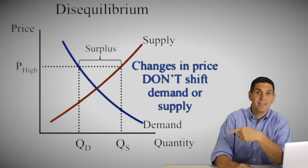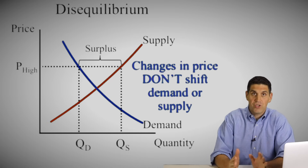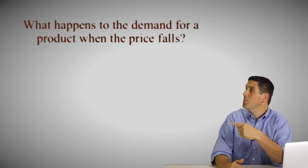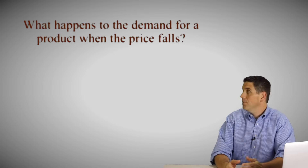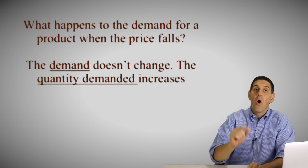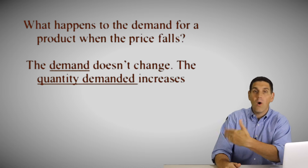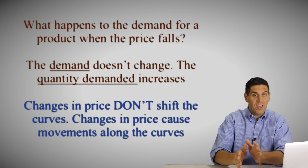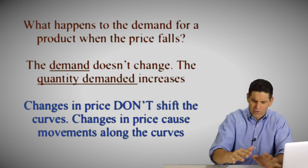Keep in mind, when there's a change in price, it doesn't shift either of the curves — neither demand nor supply actually shifts. So here's your first question: what happens to the demand for a product if the price falls? Well, nothing. The demand and the supply do not change. Only the quantity demanded would change. If the price goes down, the quantity demanded would go up and the quantity supplied would go down. So the quantity changes when there's a change in price, not the demand or the supply curve — the curves don't shift.